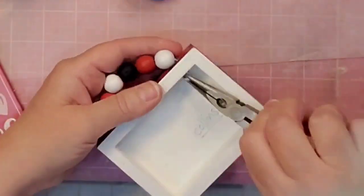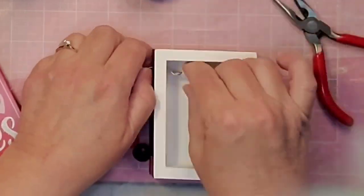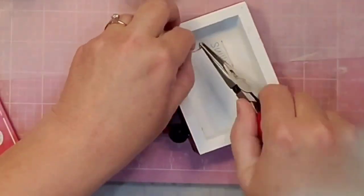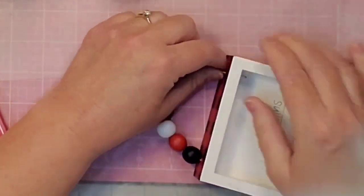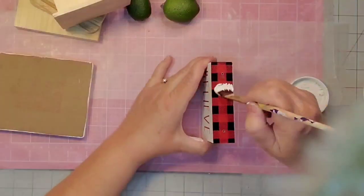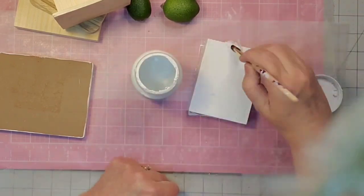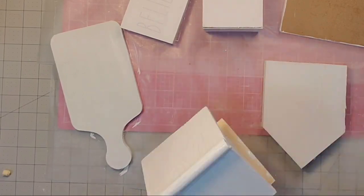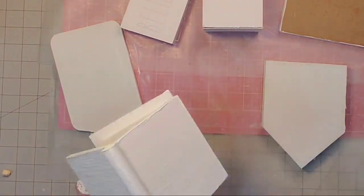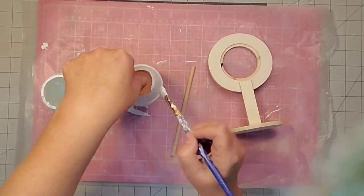First thing I'm going to do is deconstruct this frame that I got from Hobby Lobby. I'll remove the wire and beads so I can repaint them. I'll give it two good coats of white Waverly chalk paint, and that's what I'm going to do with all the raw wood items.